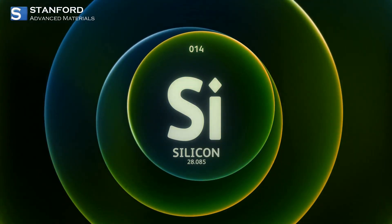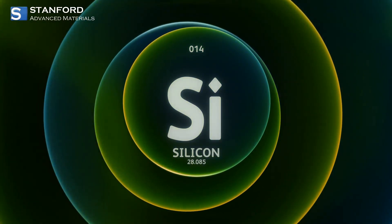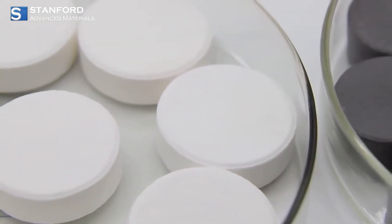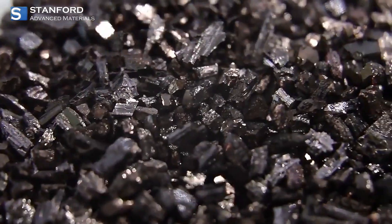Primarily produced by Stanford Advanced Materials, silicon metal comes in various forms like discs, granules, ingots, pellets, powder, and even custom shapes to suit your specific needs.